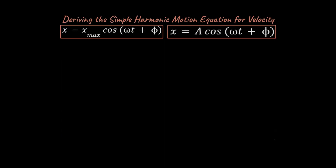We left off last time with an equation — here's one way of writing it, and here's another way of writing the equation for position versus time for an object in simple harmonic motion. The only difference between the two is that one is on your equation sheet for AP Physics C Mechanics, and the other is more commonly written and perhaps more easily understood. The A in this case represents maximum amplitude, which is the same concept as x-max — just written differently.